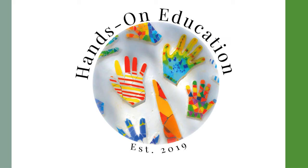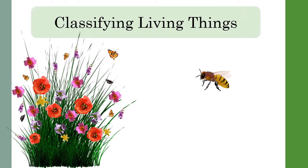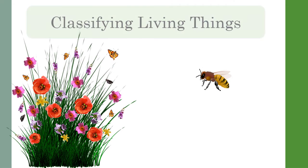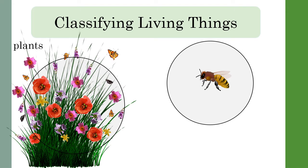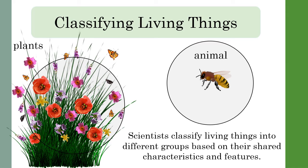Hi and welcome to Hands On Education. In this video we will look at classifying living things. This means grouping things together based on their shared characteristics and features. By grouping living things together we can understand how they have evolved and why they behave the way they do.